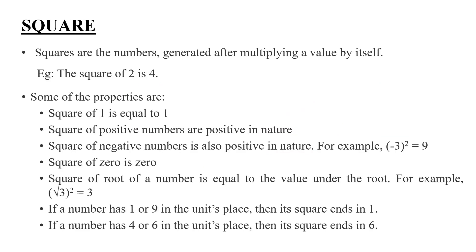We are going to start with ratio and proportion. We are going to do numbers generated after multiplying a value by itself. If we multiply the number, the number is a square.